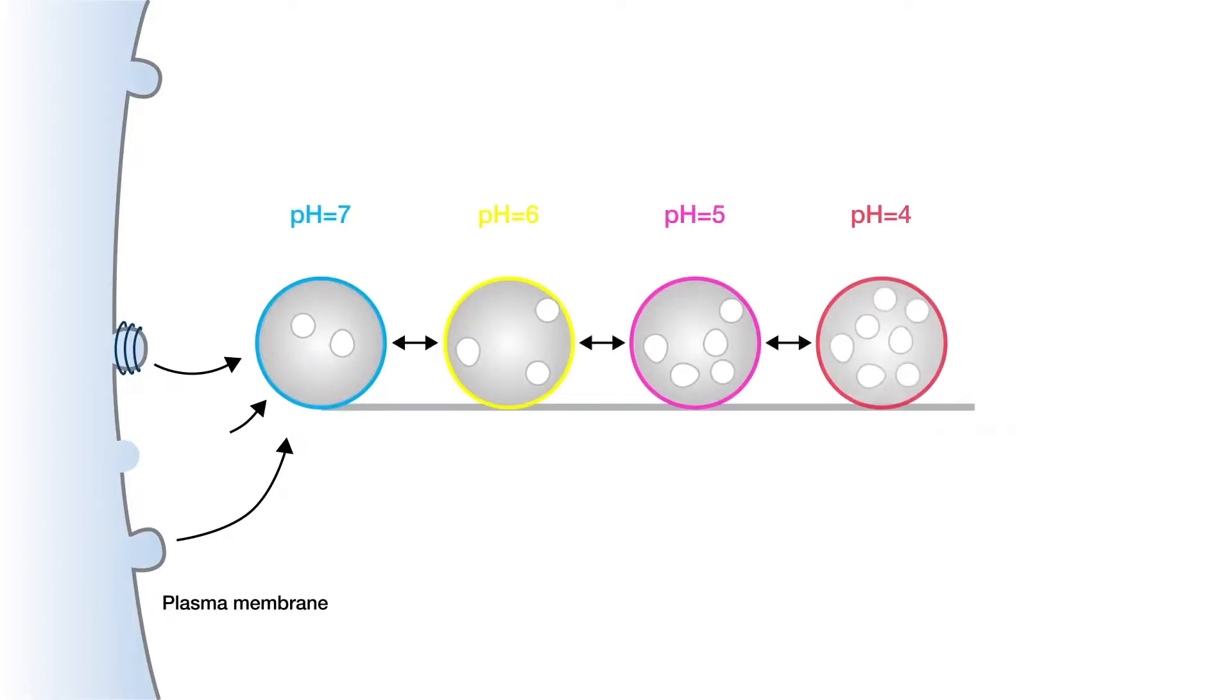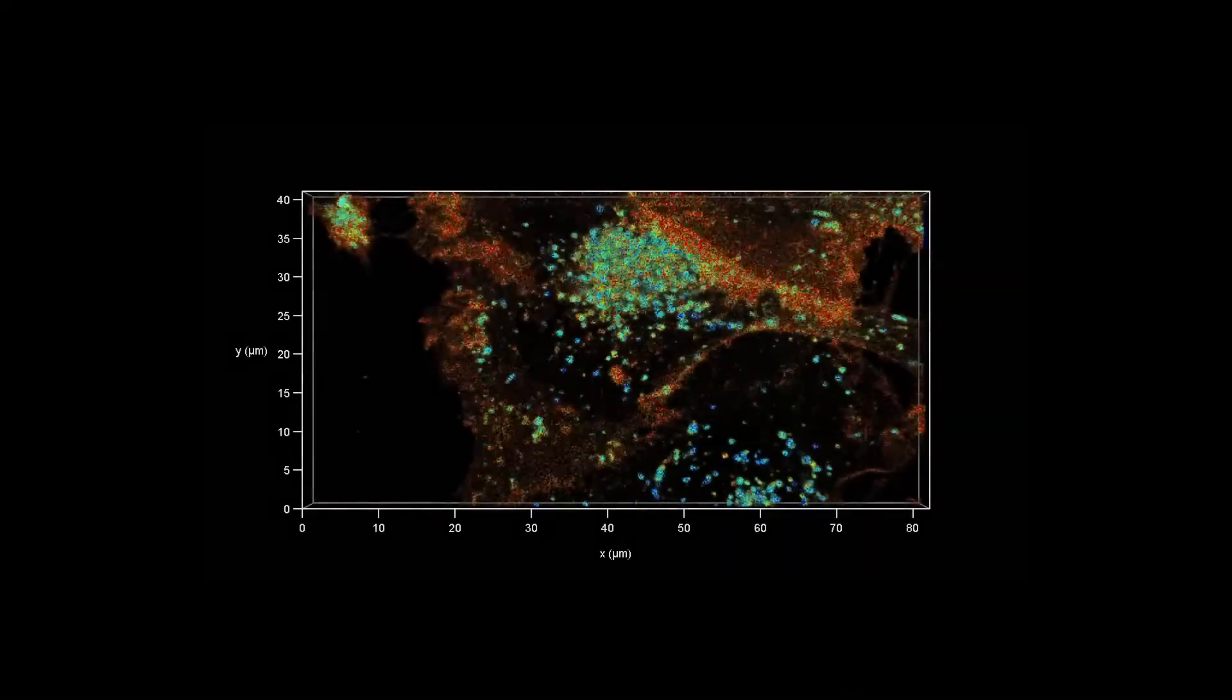One of the hallmarks of endosome maturation from the cytosol to early, then late endosomes, and then to lysosomes, is the change in pH from 7 to 4. This pH change is the functional readout of the maturation of endosomes, which we need to characterize the process.